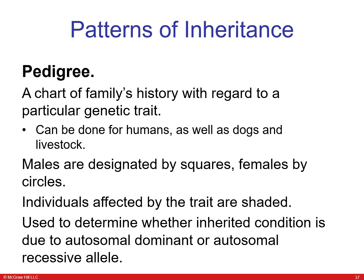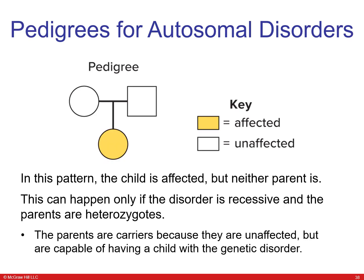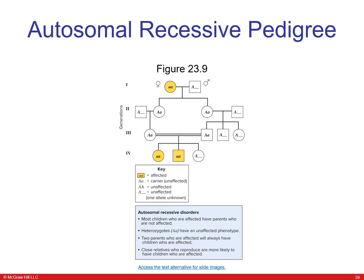Pedigrees are used to determine whether an inherited condition is due to autosomal dominant or autosomal recessive alleles. In autosomal recessive pedigrees, a child may be affected while neither parent is — this can only happen if the disorder is recessive and the parents are heterozygotes. Most children who are affected have unaffected parents. Two affected parents will always have affected children, and close relatives are more likely to have affected children.